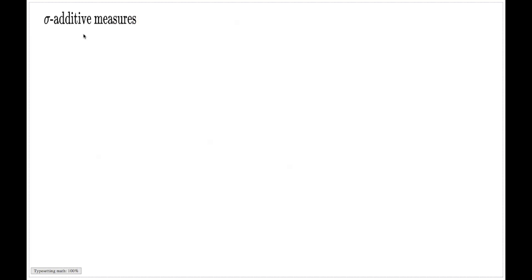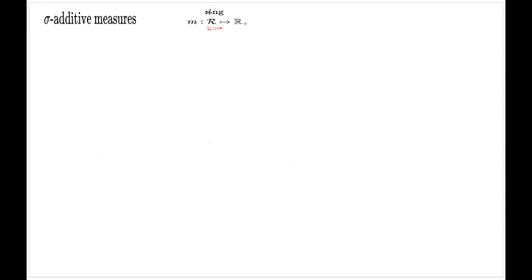In this video I will show a few properties of particularly sigma-additive measures and prove them. The proof shows you a few basic standard techniques which you have to know when you work with sigma-additive measures. The result I'm going to prove is this: imagine I have a measure on a ring. Then for such a measure the following three properties are equivalent. First: the measure is sigma-additive.